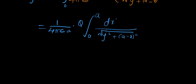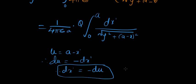Now, for our convenience, I'm going to substitute something here for A minus x prime. So let's say u equals A minus x prime. Then therefore, du is minus dx prime. That means dx prime equals minus du, right?